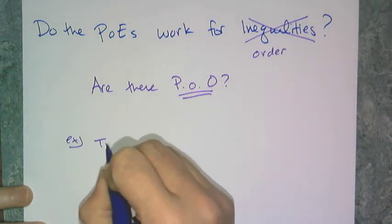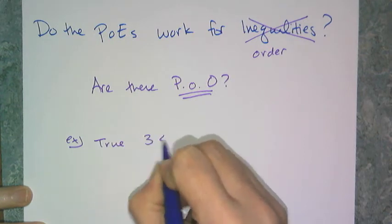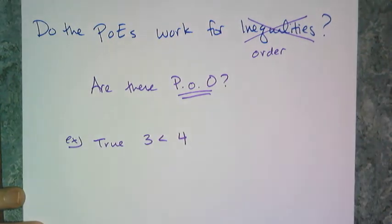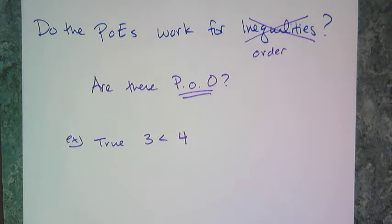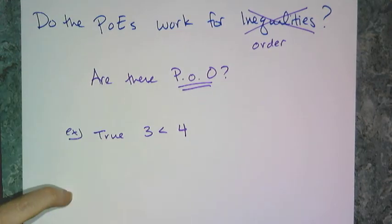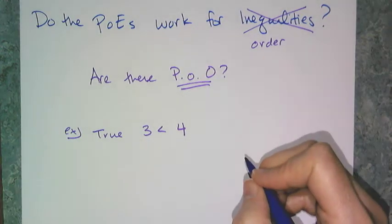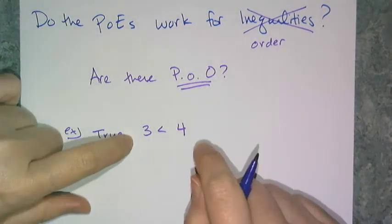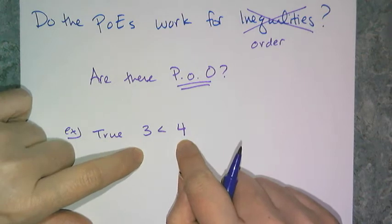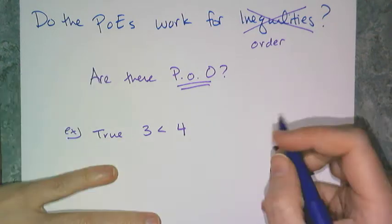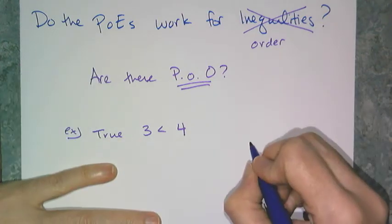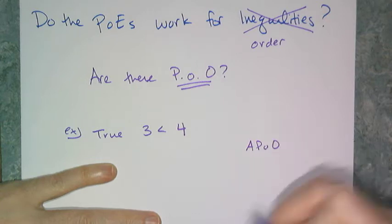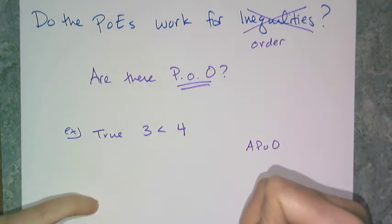It is true that 3 is less than 4. You can do the same thing for less than or equal to, greater than, or greater than or equal to — I just want to show it for one case. So what I'm looking for is: do we have the addition property of order? Can I add the same thing to both sides of an inequality and have it still be true? I'm looking for APO — the addition property of order.